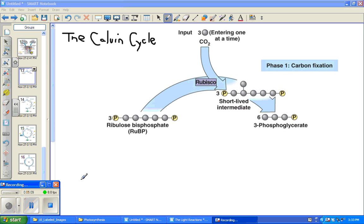We can break the Calvin cycle down into three steps. Phase one, carbon fixation. Phase two, reduction. And phase three, regeneration of the CO2 acceptor.